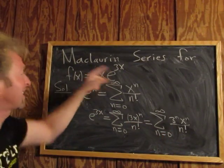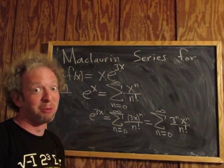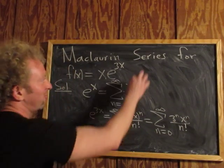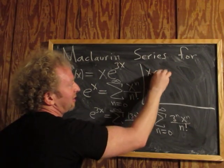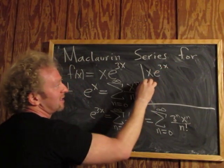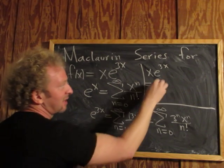We have e to the 3x. We need x times e to the 3x. All we have to do now is multiply by x and we're done. So to finish, we have x times e to the 3x, that's equal to x times this thing.